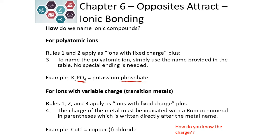We can tell it is polyatomic because the ending is different — it's not -ide. If we have ions that have variable charge, this is the transition metal. So in the shorter columns on the periodic table, we have to add a little more information to our name. We include the charge of the metal using Roman numerals in parentheses. So if we have copper, which falls in the shorter columns in the middle of the periodic table, we would have to include the charge of the copper as a Roman numeral.